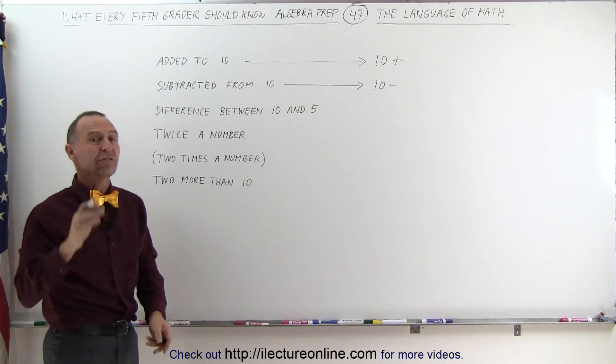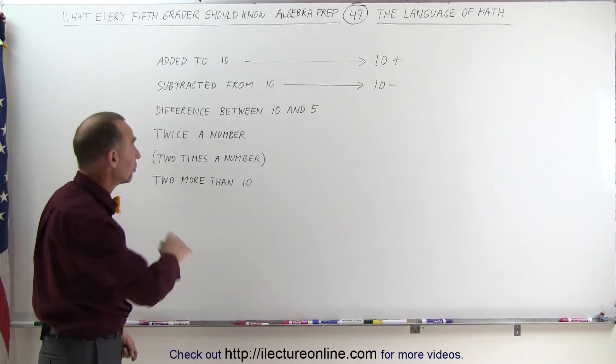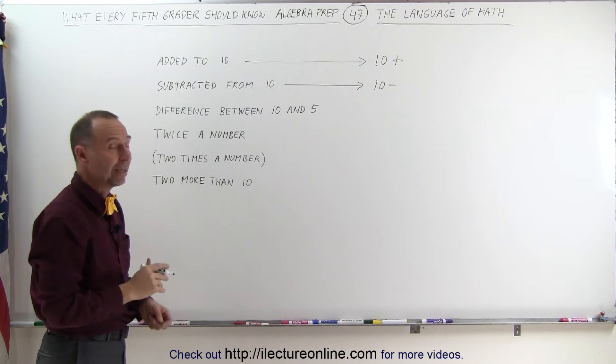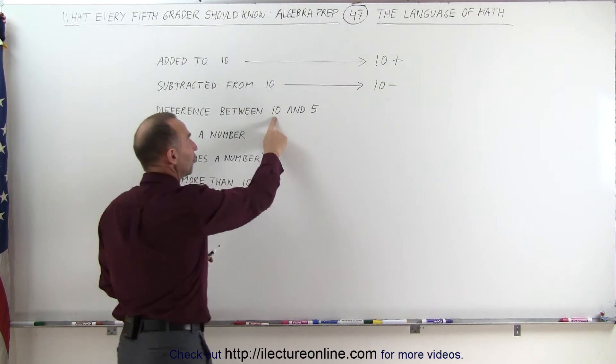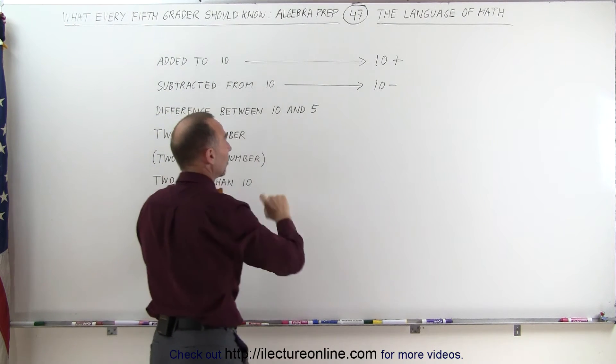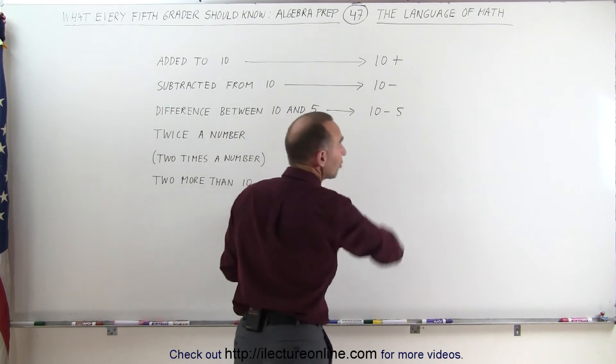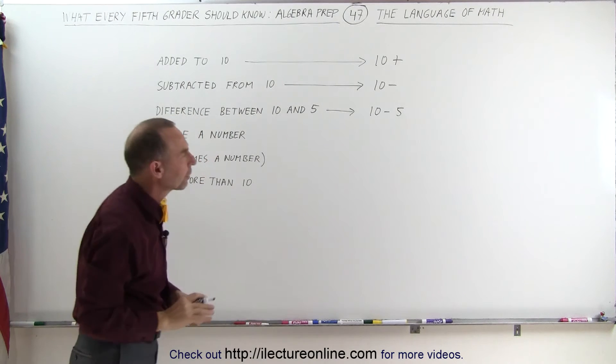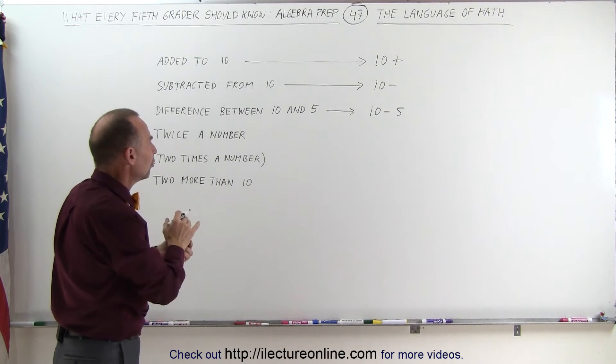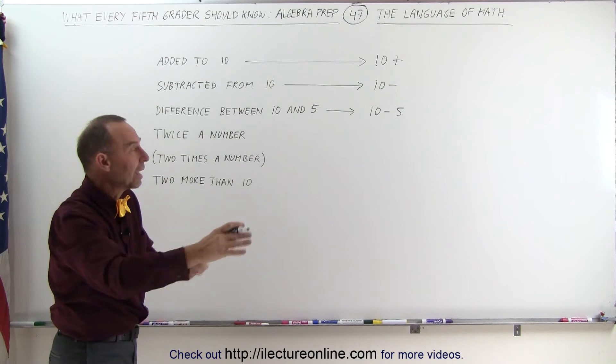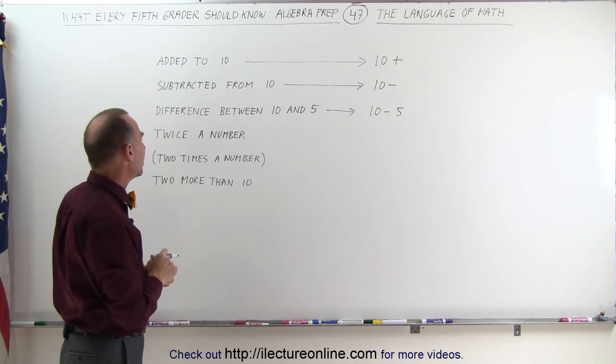If somebody says the difference between two numbers, for example the difference between 10 and 5, then you're going to have subtraction and you put the first number first and the last number last. So this means 10 minus 5, not the other way around, and that's sometimes very confusing. When you see the difference between two numbers, you write the first number first, the last number last, and you write a subtraction sign between them.